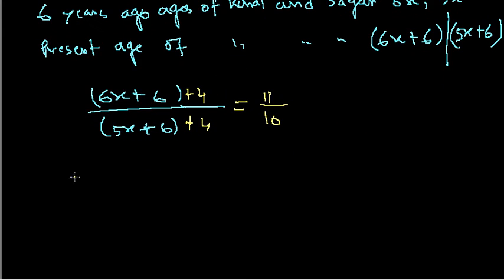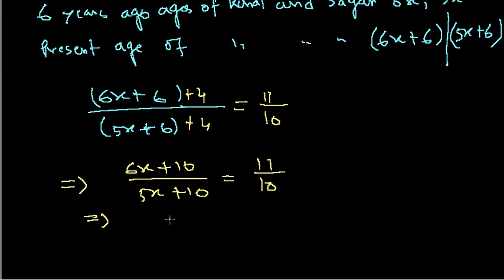So we'll add four more and it will give us the ratio of 11 by 10. So once we construct this equation, now everything is very very easier. Now what will it be? So (6X plus 10) divided by (5X plus 10) equals 11 by 10. So this is the case.